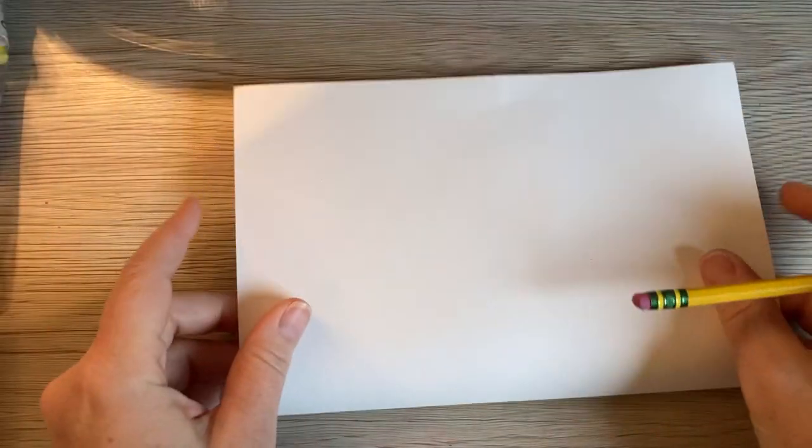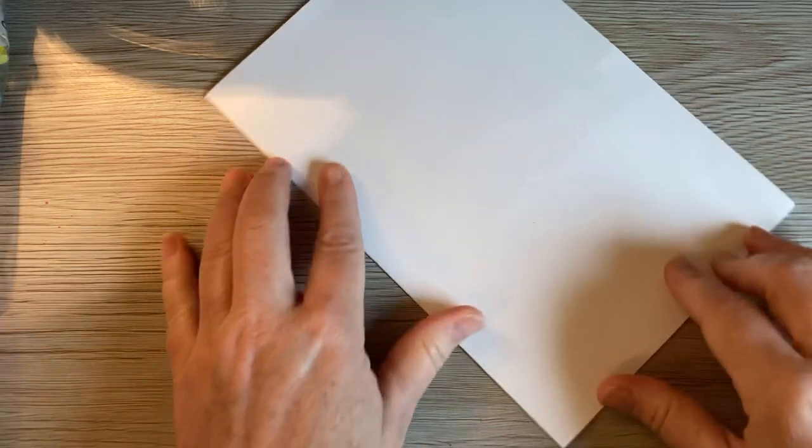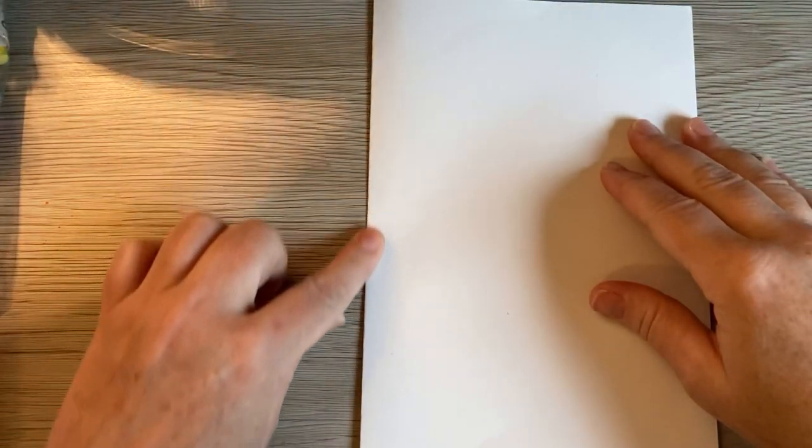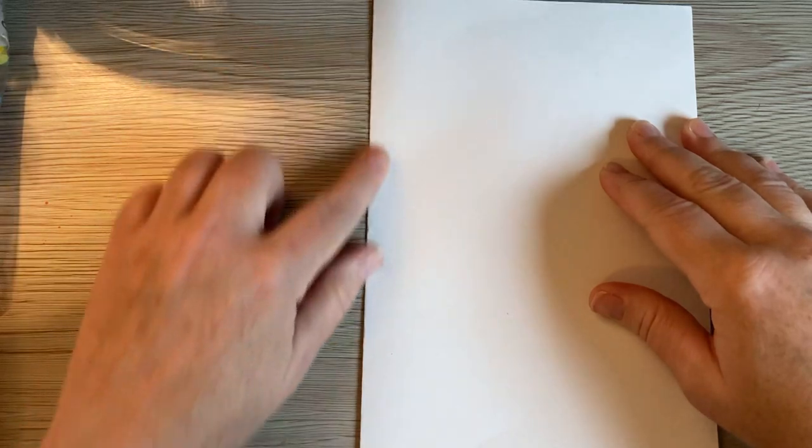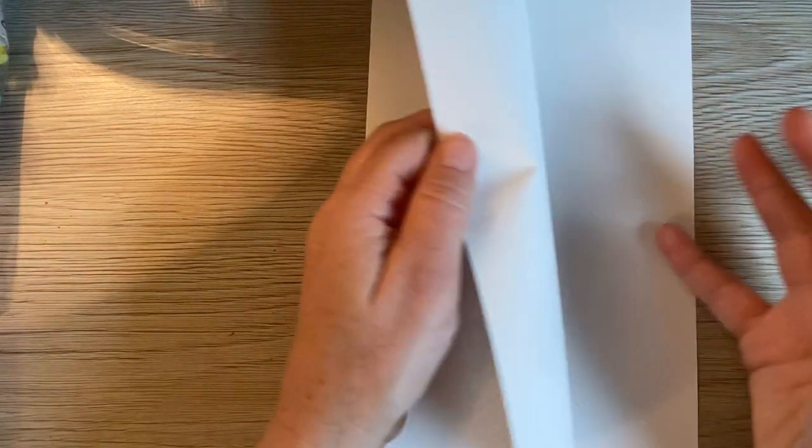Start off by taking one of your papers and folding it in half hamburger. We're going to make a template for our hearts so that all our hearts can be the same size and shape. So fold your paper in half and you're going to draw that heart along the folded edge. If you were to draw on the open edge, when you cut it out, you'd have two pieces not joined together.